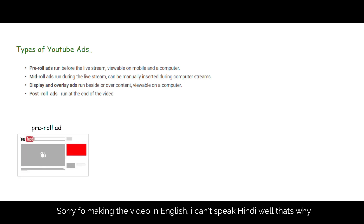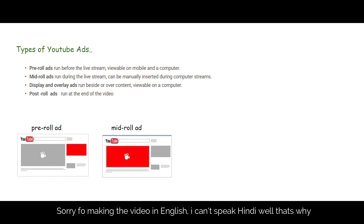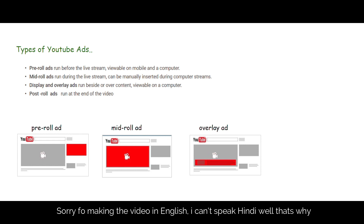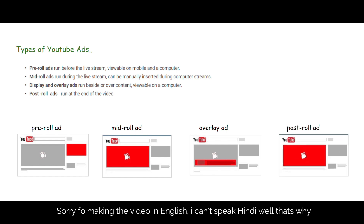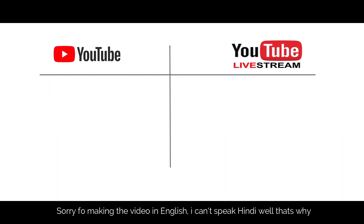Pre-roll ads are displayed at the starting of the video. Mid-roll ads are displayed during the video. Overlay ads are also displayed during the video — they are just like a small card, only displayed on computers. And finally, post-roll ads are displayed at the end of the video. These are the four types of ads in YouTube.